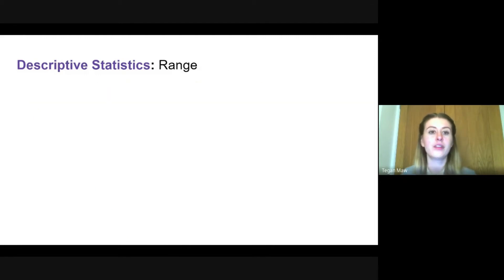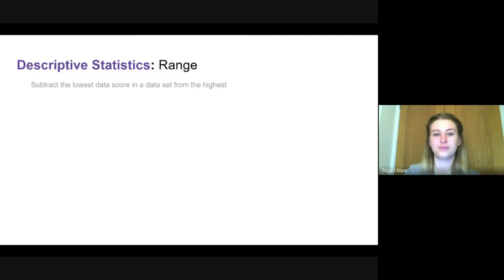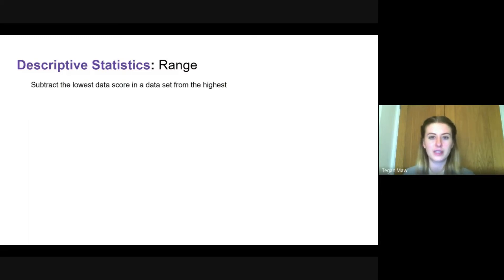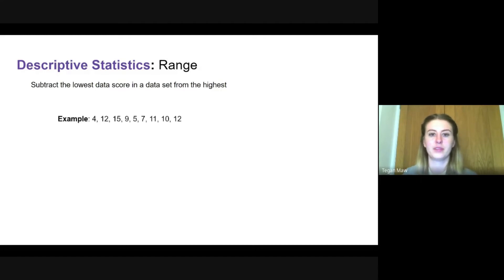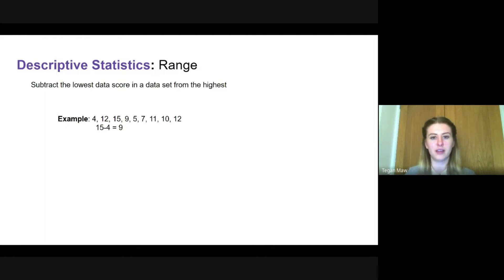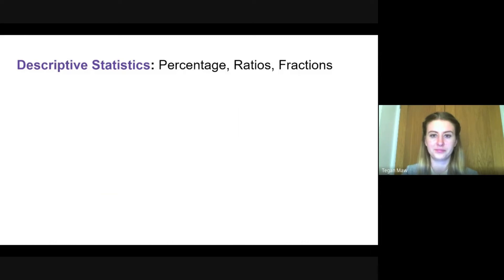Another descriptive statistic is the range. To work out the range, subtract the lowest data score from the highest. Using our data, 15 was the highest and 4 was the lowest. 15 minus 4 gives you 11, so the range is 11.